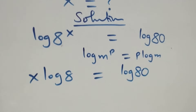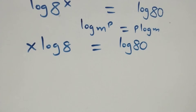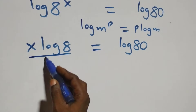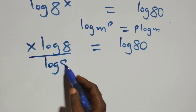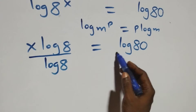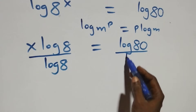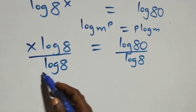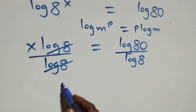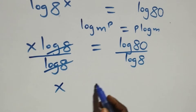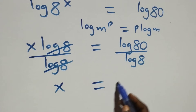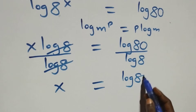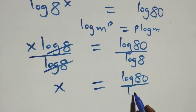The next step: divide both sides by log 8. That is, divide this side by log 8 and also divide the other side by log 8. This implies log 8 cancels, and we have x left, which equals log 80 over log 8.